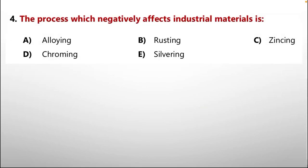Question number four: the process which negatively affects industrial materials is — A: alloying, B: rusting, C: zinc, D: chromium, E: silvering. We all know that the majority of industrial products are made up of iron, and iron is a tough material. However, the thing which destroys iron is the rusting process, so the correct option is B.